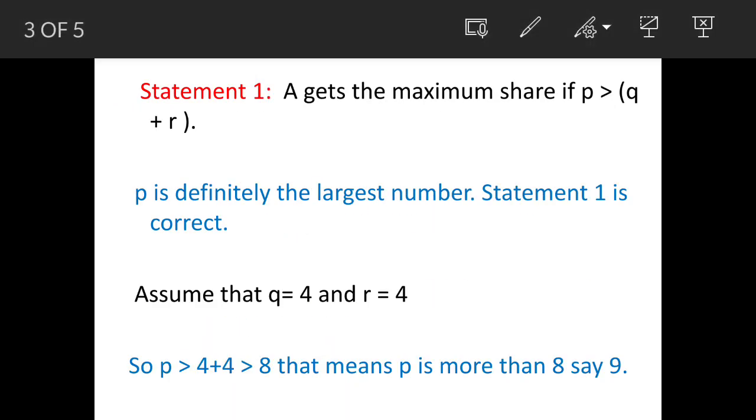Now first statement: A gets maximum share if p is more than q plus r. So by all mathematical logics this statement is correct, because if p is more than what is given to B and C, that means amount of money given to A is more than what is given to B and C, then the statement has to be correct. But we will still check.